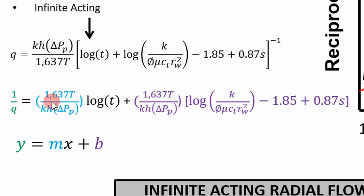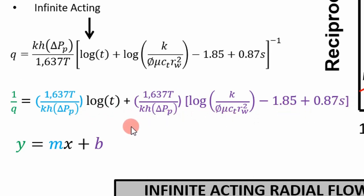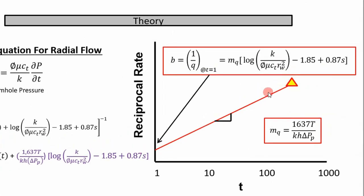The terms in blue and purple are constant, so if you plot this on a reciprocal rate versus log-of-time semilog plot, you will get a straight line. That's why this interpretation is useful — from this straight line you can get the slope and the intercept. The intercept on a semi-log plot occurs at log of one, because the log of one is zero.